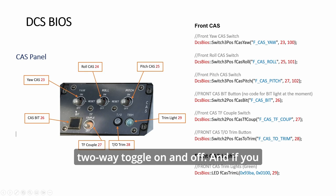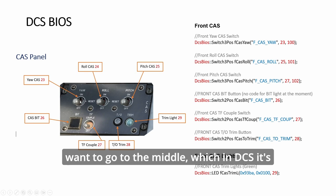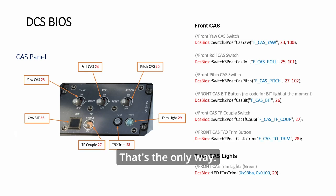On and off. And if you want to go to the middle, which in DCS is spring loaded, you have to use the mask. That's the only way.